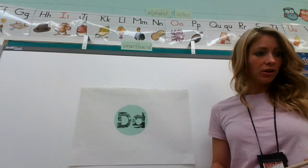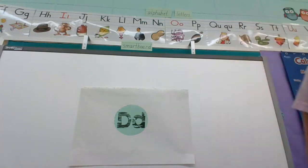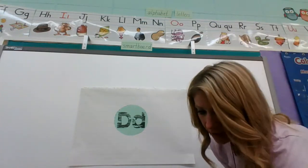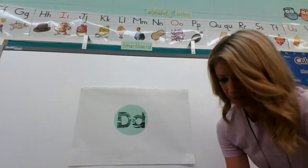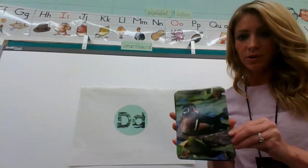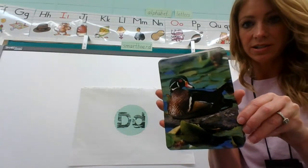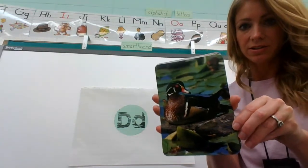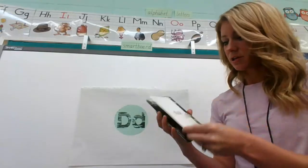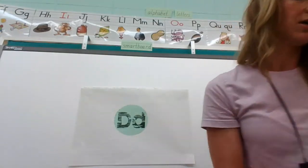Let's get started and look at our D pictures. The first one is an animal that starts with D. You're right — it's a duck. Let's look on the back. There's the word duck.